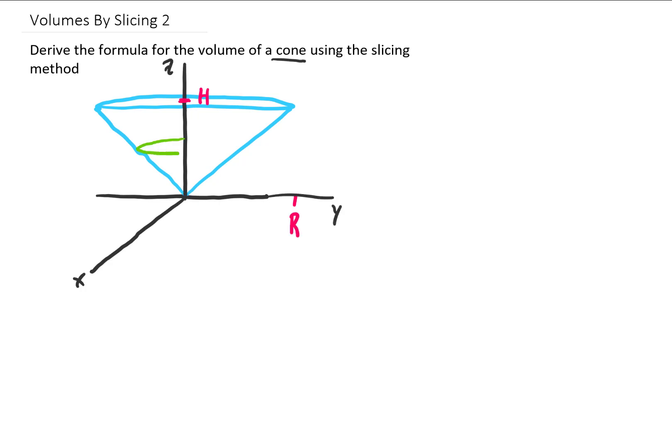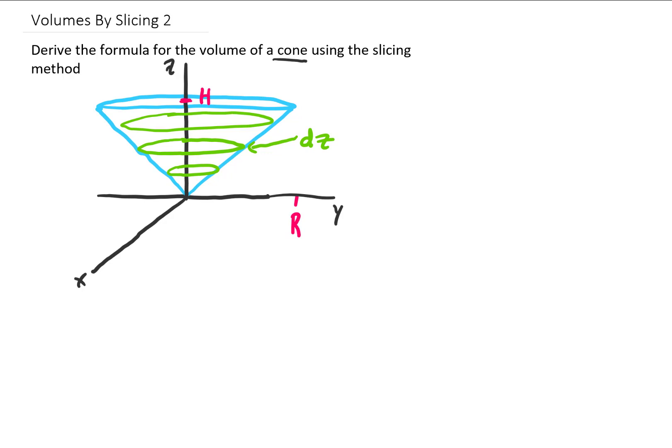If we slice this cone into pieces, you'll notice that each one of those pieces is going to be a circle, or technically an infinitesimally thin cylinder. Each one of these cylinders is going to have a thickness of dz. And what we're going to do again is look at a specific circle or cylinder here, say at some specific value of z, we'll just still call it little z.